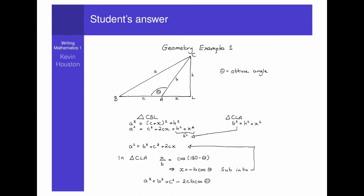Well, they've drawn a nice picture for us, which is good, but let's try reading it. Reading from left to right, we can see it says triangle CBL, triangle CLA, a squared equals c plus x all squared plus a squared, b squared equals a squared plus x squared.